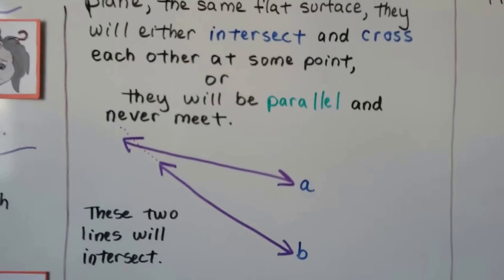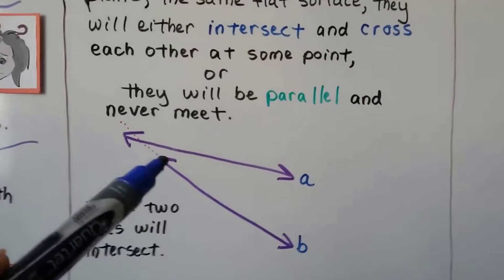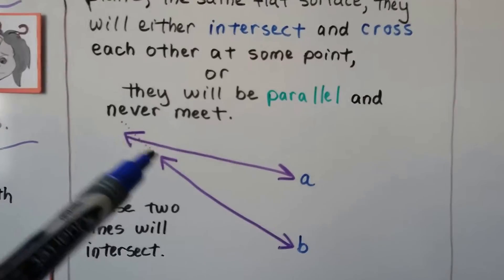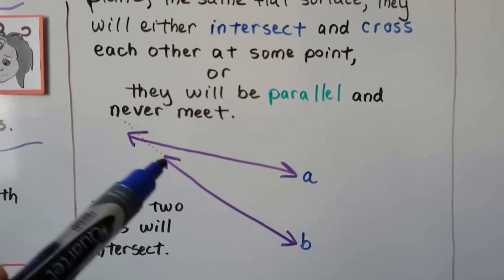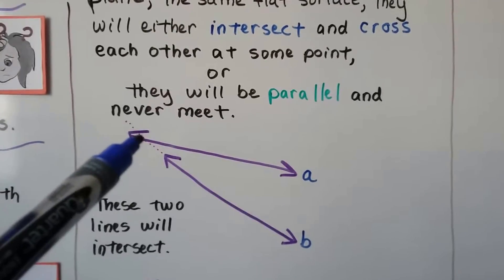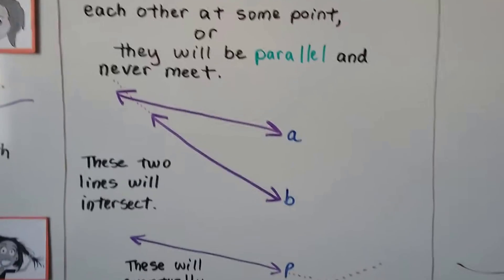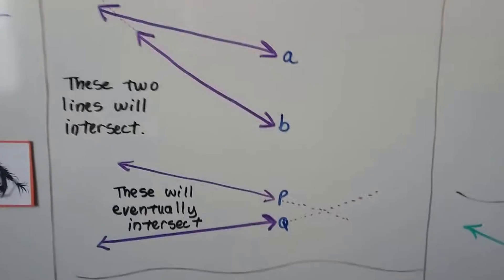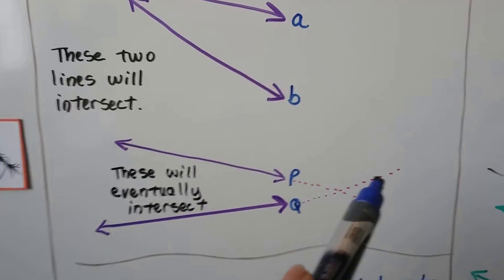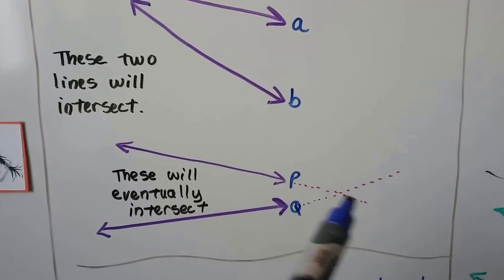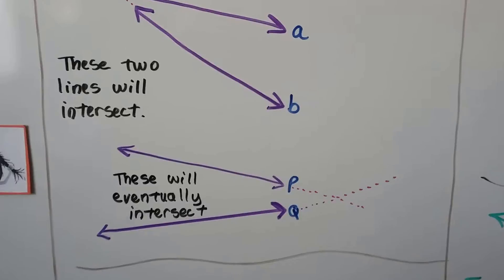Look at these two lines. These lines are about to intersect, aren't they? We've got arrows on the tip, so we know they're going to continue on. This one can continue on and cross line A right at that point. So they're not parallel. These two are eventually going to intersect — if they continued on, because the arrows are pointing, they would meet at this point.